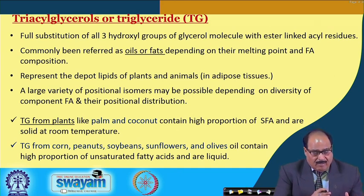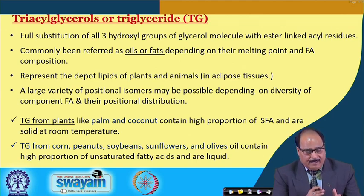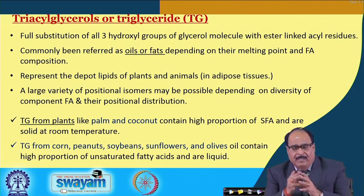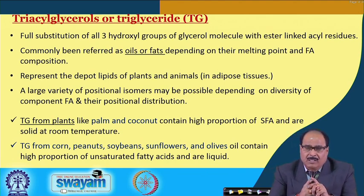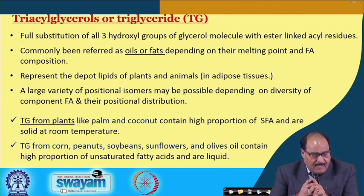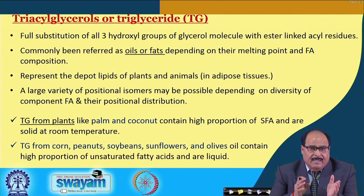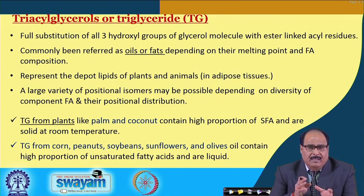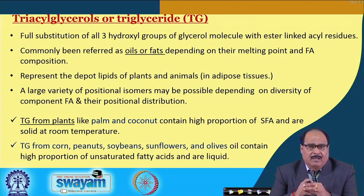Triglycerides from plants like palm and coconut contain comparatively high proportions of saturated fatty acids and are solid at room temperature. On the other hand, triglycerides from plant materials like corn, peanut, soybean, sunflower oil and olive oil contain high proportions of unsaturated or polyunsaturated fatty acids and are liquid at room temperature.